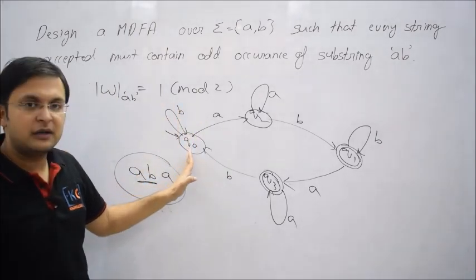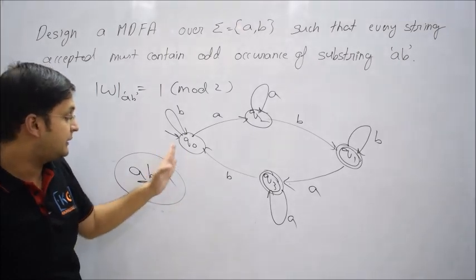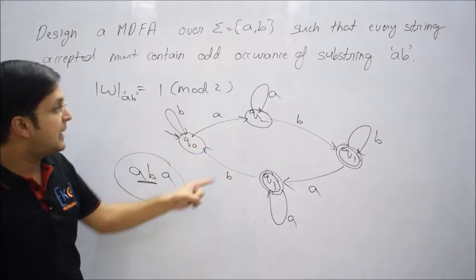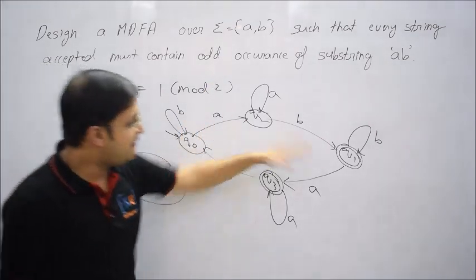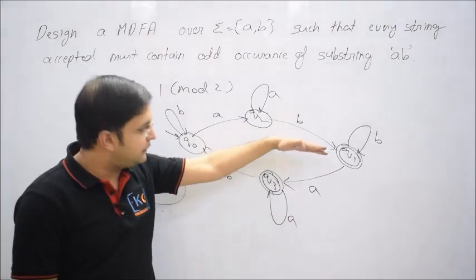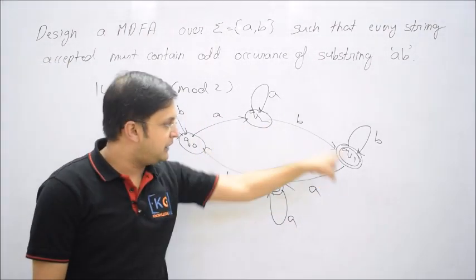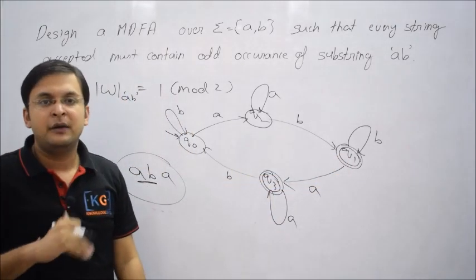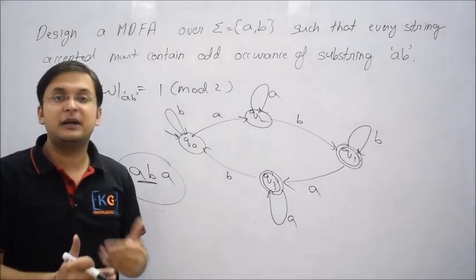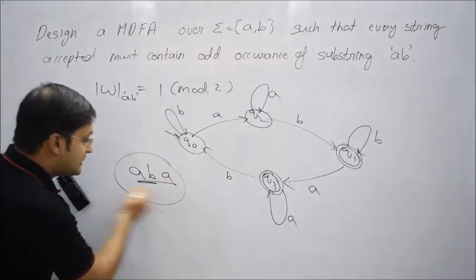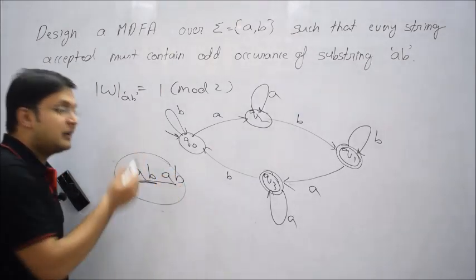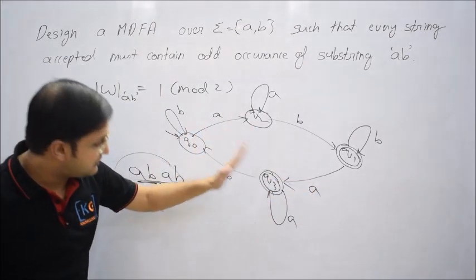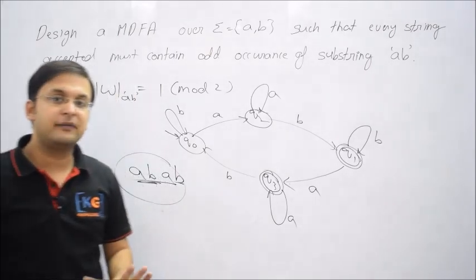If you are on state Q0, that is even because AB hasn't happened yet. If you are on Q2, still unacceptable because A has occurred but the pattern is AB, so I must wait for B. If B occurs, then now this is odd. Similarly, if you are on AB and you are on Q1, there is odd occurrence. But even if there comes A, the pattern is still odd. Because unless the next B comes, then only you can become even. So Q3 must also be final state.